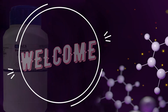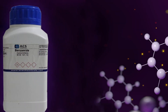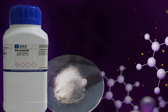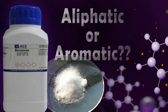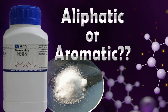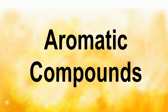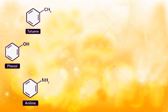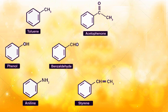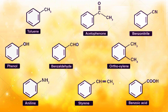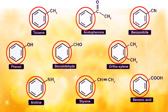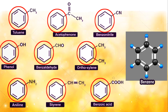Dear students, the third step in the analysis of organic compounds is to find out whether the given compound is aliphatic or aromatic. The term aromatic compounds stands for the whole series of compounds which contain one or more benzene rings in their molecule. The stable character of aromatic compounds is due to the presence of a ring structure, specifically benzene.